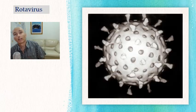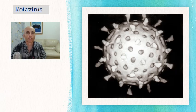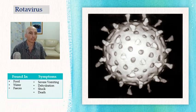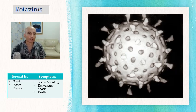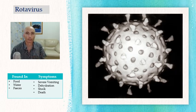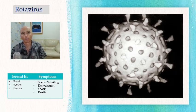Last but not least, the Rotavirus. It is the main cause of gastroenteritis in babies and young children. It can be found in food, water, and feces. Symptoms include severe vomiting, dehydration, shock, and it can actually cause death.